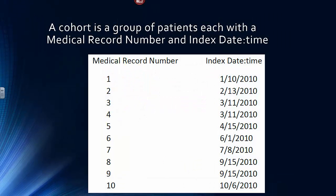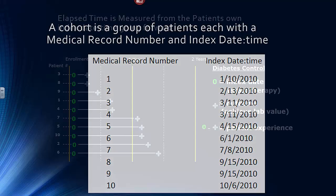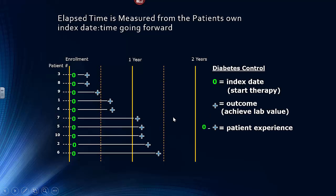Let's remind ourselves what a cohort is. A cohort is a group of patients, each with a medical record number and an indexed date time. The indexed date time is critical because all analyses are going to be done from that date time moving forward. Elapsed time is evaluated and counted from that indexed date.